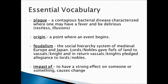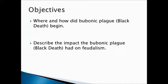Some essential vocabulary for today. A plague is a bacterial disease — you would have a fever and become delirious. Origin is where something begins. Feudalism — a social hierarchy system where lords and nobles give fiefs of land to vassals and knights below them, who in return pledge allegiance. Impact means something has a strong effect and usually causes change. The objectives: can you tell me where and how the bubonic plague began, and what was its impact on feudalism?